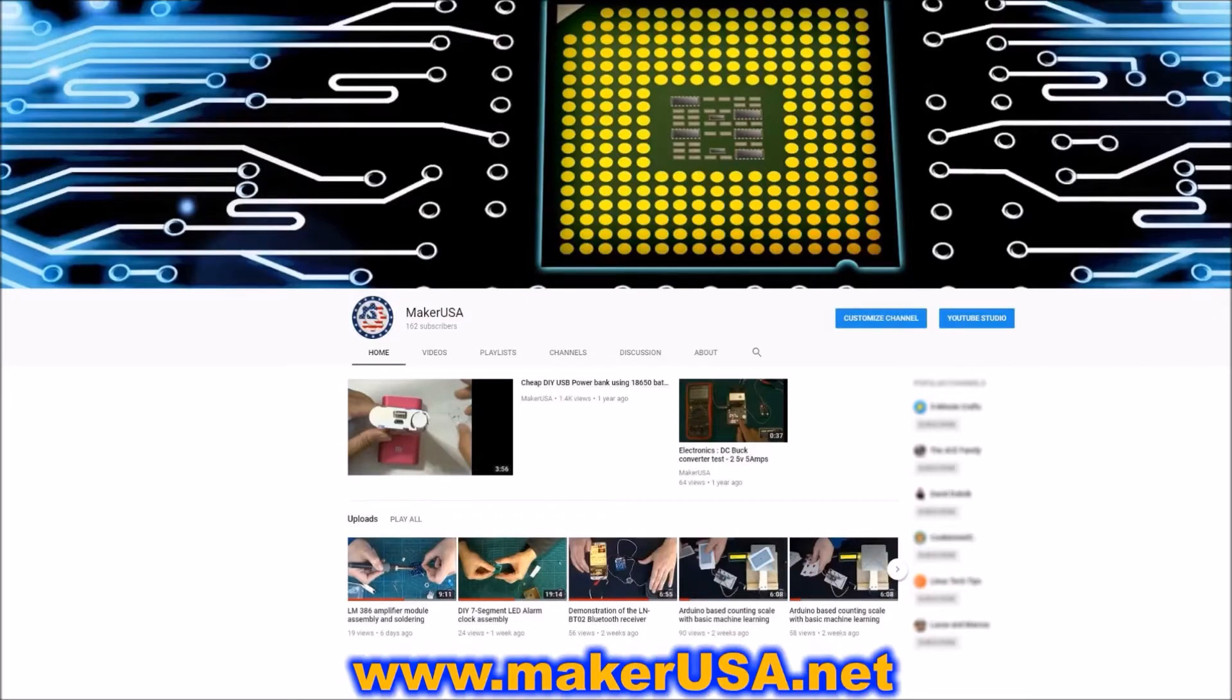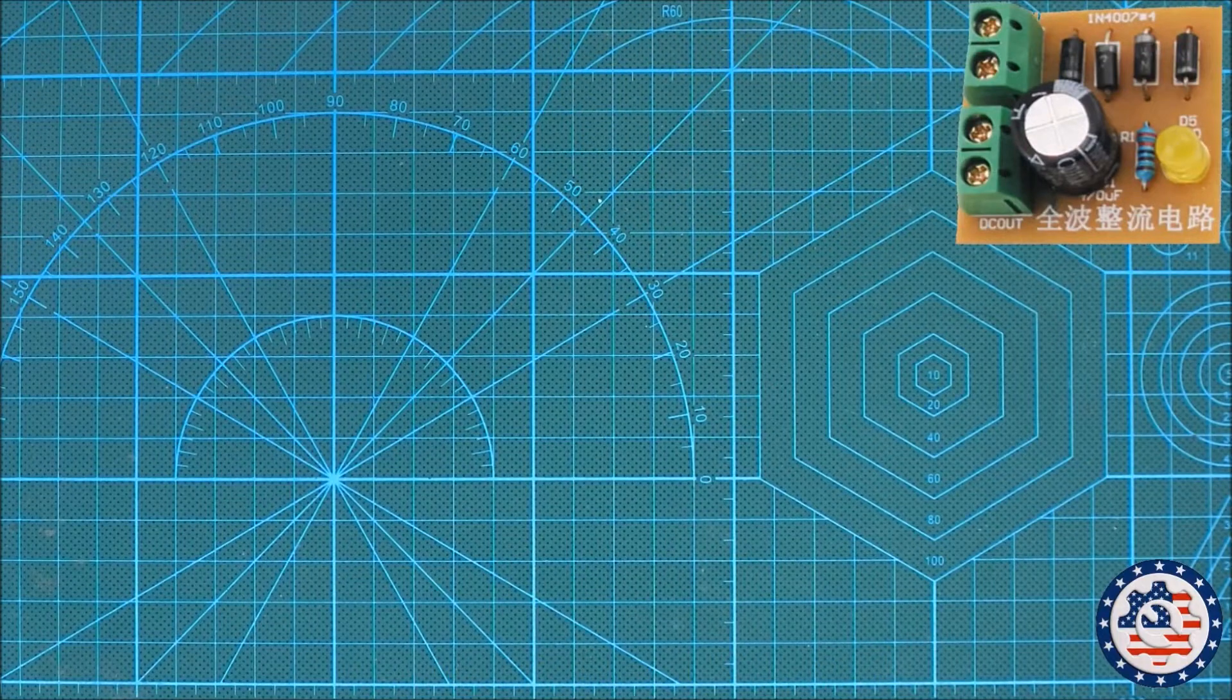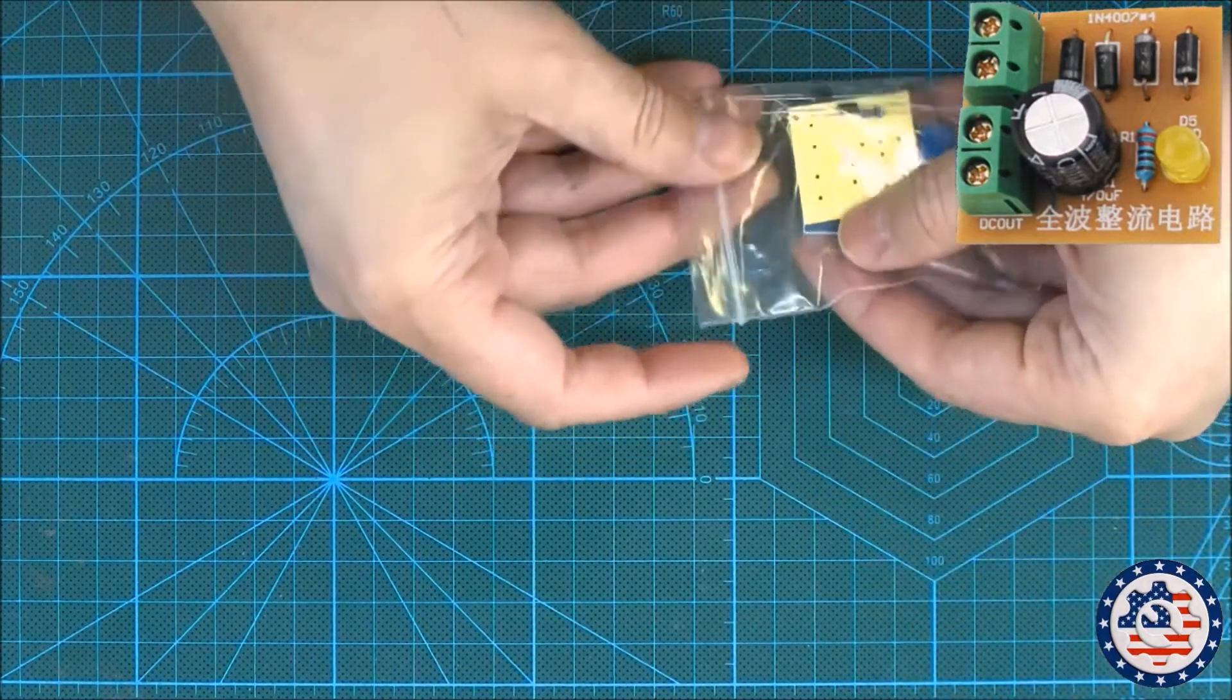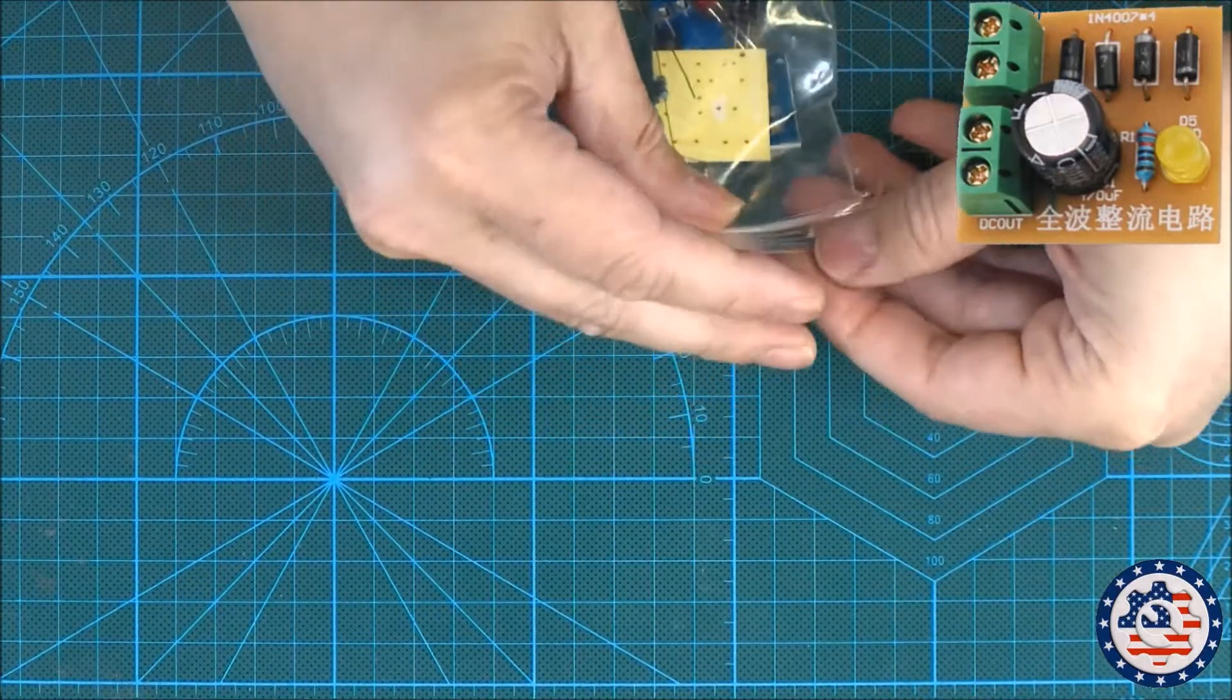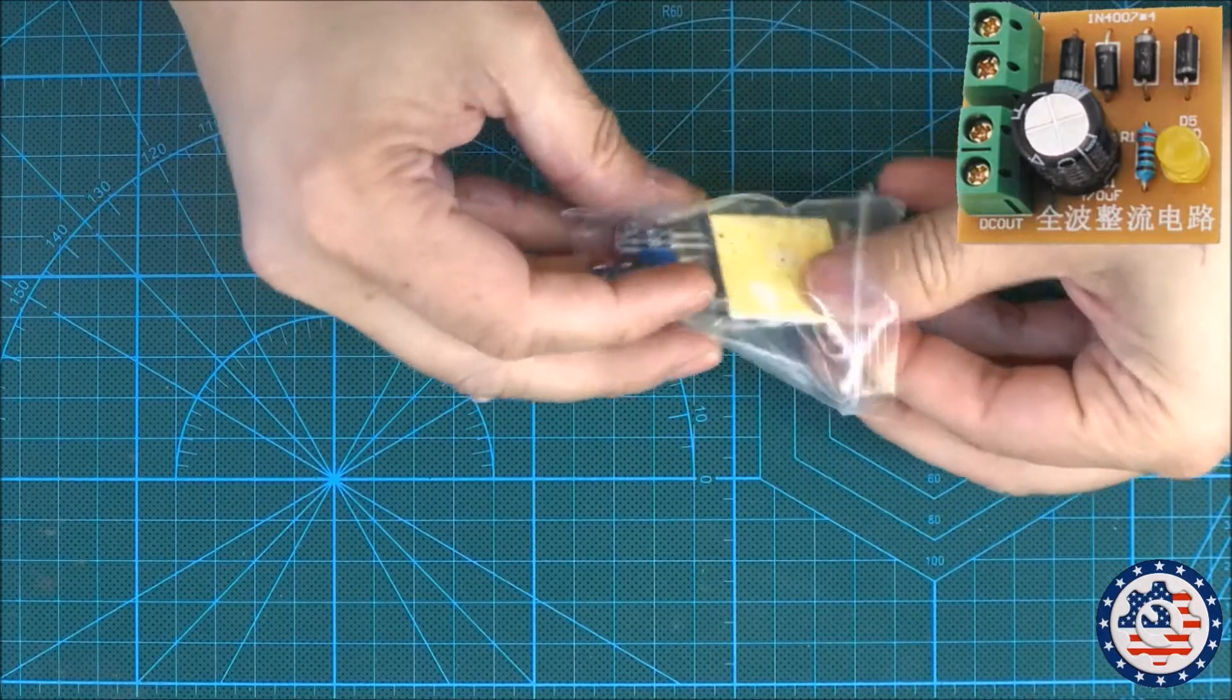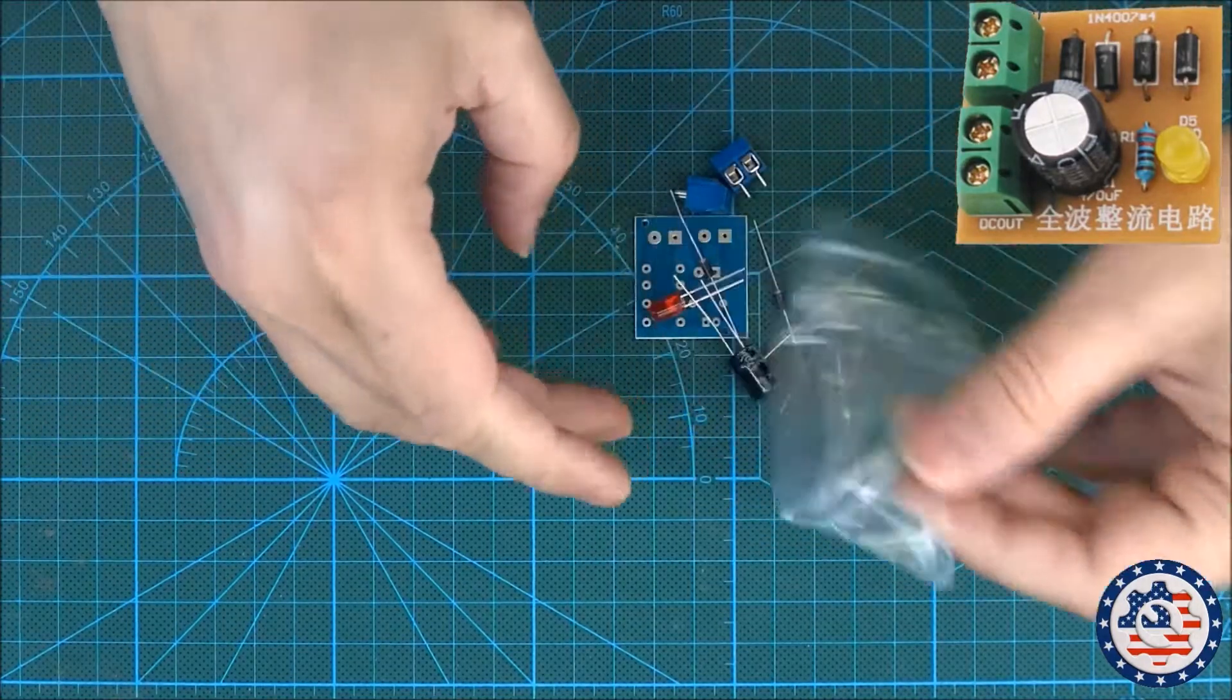So let's quickly have a look at what we have. Here's a picture of the module fully assembled and I have this packet here with all the parts. So it's pretty straightforward.